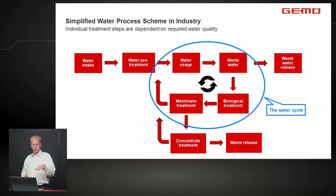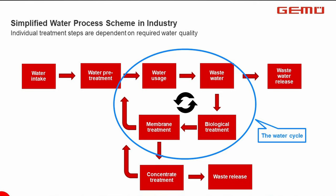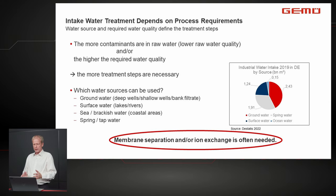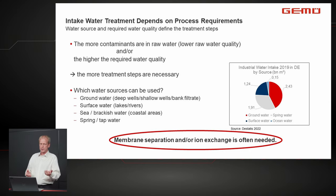The simplified industrial water treatment process flows horizontally from water intake through pre-treatment and usage to wastewater treatment and release. For water reuse, there is a blue water cycle with additional treatment steps — biological treatment and membrane treatment — where membrane treatment and ion exchange are again found. The treatment required depends on both the raw water quality at intake and the required water quality for the process.